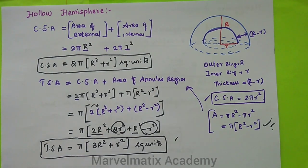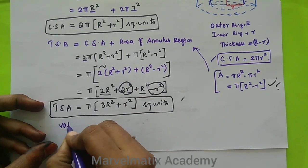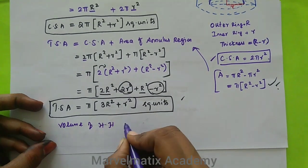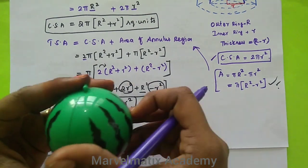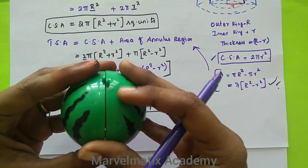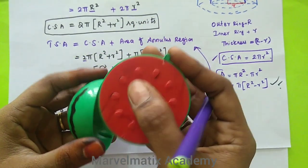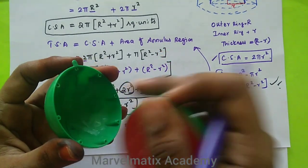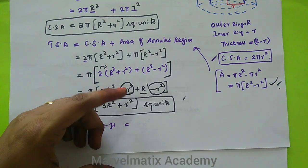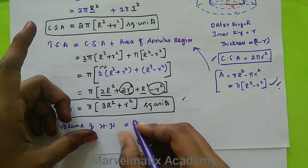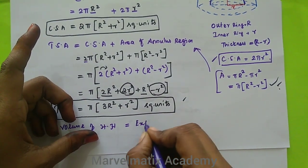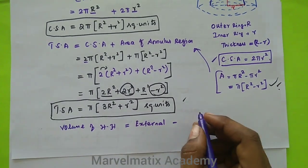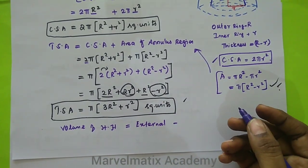Next, we find the volume — the volume of the hollow hemisphere. This is the same concept. If you want to find the volume, we consider two radii: external and internal. Volume equals external volume minus internal volume.